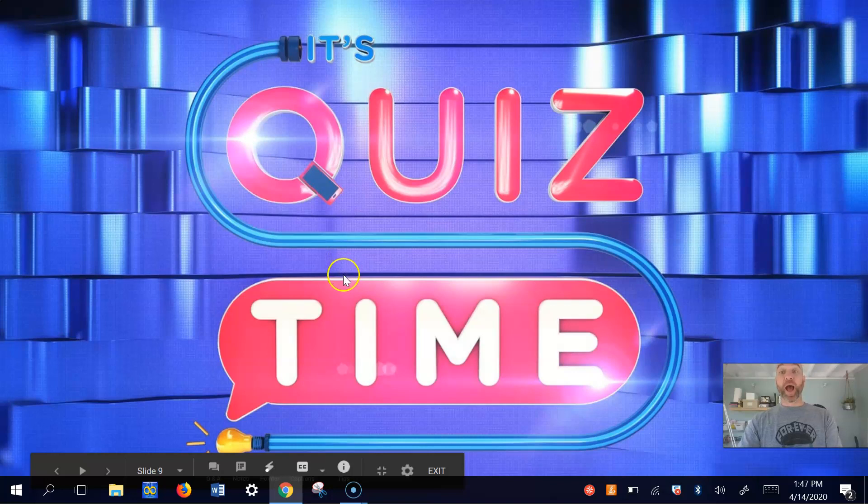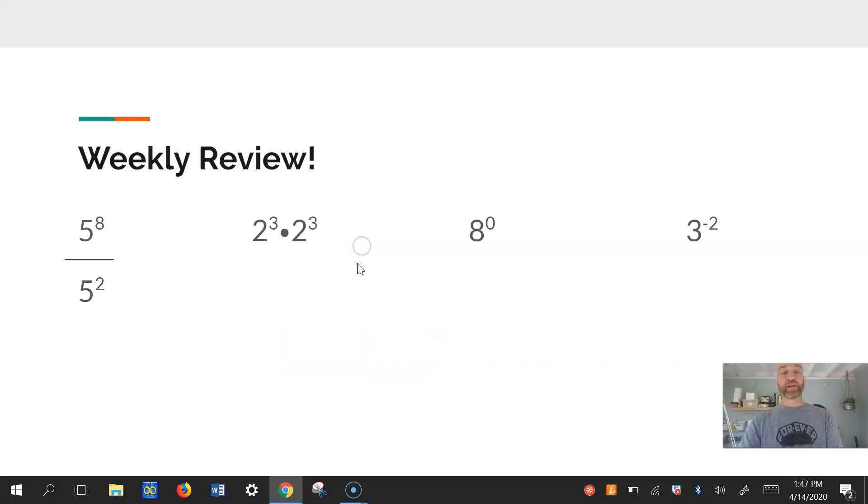That was the other one. Quiz time. Ready? Again, after I read it, press pause. Give yourself a shot. Oh, it's a weekly review. So we have 5 to the 8th power over 5 squared. We have 2 cubed times 2 cubed. We have 8 to the 0. What does that mean? Something to the 0 power. We have 3 to the negative 2 power. That's 21 right there. And if you get stuck, yeah, just unpause and see what we got. Ready, set, give your best shot.